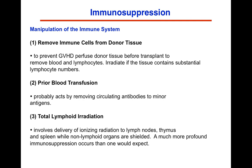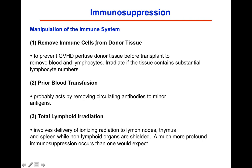You can manipulate the immune system in many ways. One way is to remove immune cells from the donor tissue. To prevent graft-versus-host disease, tissues that harbor immune cells — particularly T-cells — are perfused before transplant to remove blood and lymphocytes, and irradiated if the tissue contains a substantial amount of lymphocytes. This kills those lymphocytes present in the donor tissue.